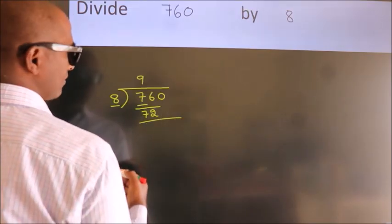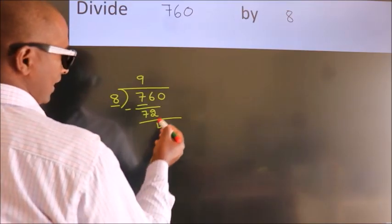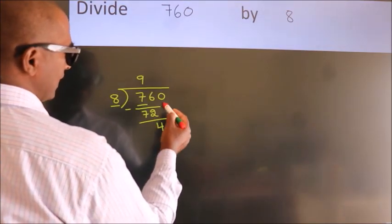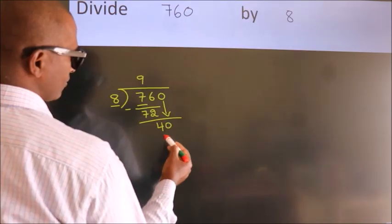Now we should subtract. We get 4. After this, bring down the beside number. So 0 down. So 40.